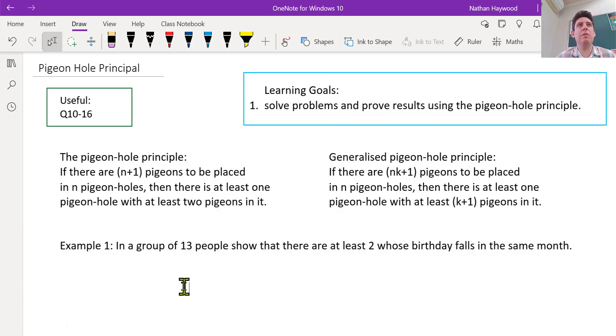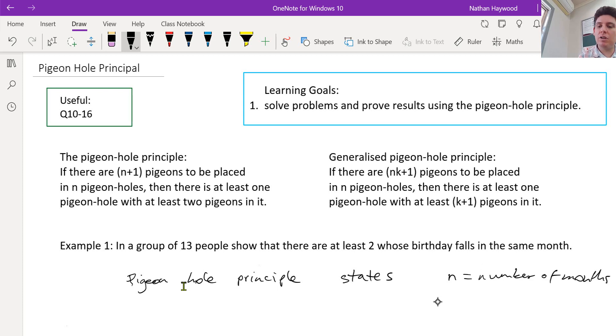If there's 13 people in your class, pigeonhole principle states n is, there's 12 months, n is number of months, which is 12. The number of people is how many? It's 13.